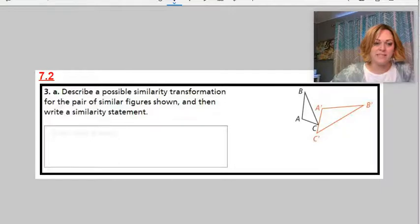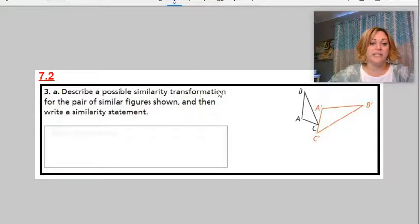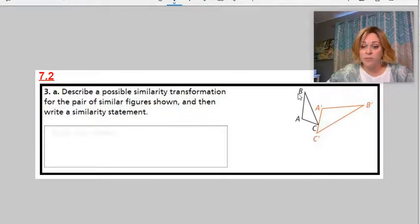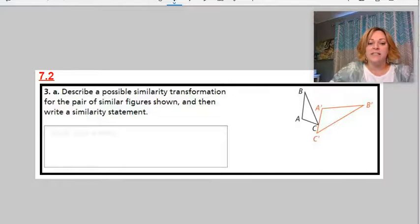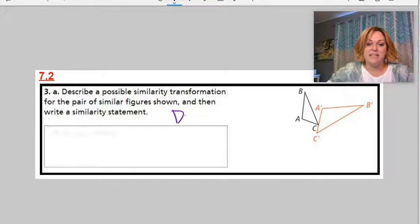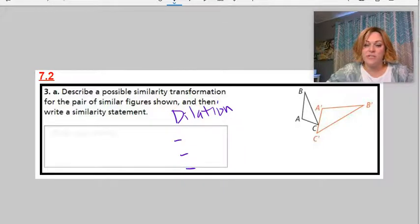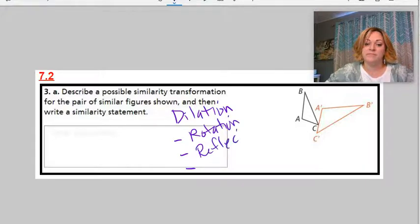7-2 was kind of a shorter lesson. It says describe a possible similarity transformation. So look at the pre-image and the image. Remember the ones without the prime or tick marks, that's the original. And basically you just have to discover or determine what is involved. So a dilation definitely changes the size. But there are also those three rigid transformations we talked about before. And those are a rotation, could be that. It could be a reflection.